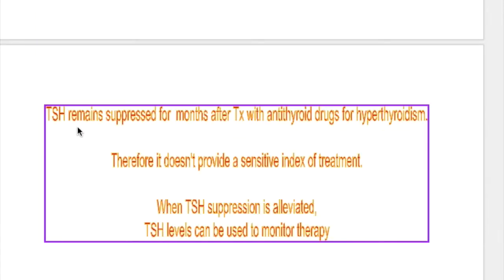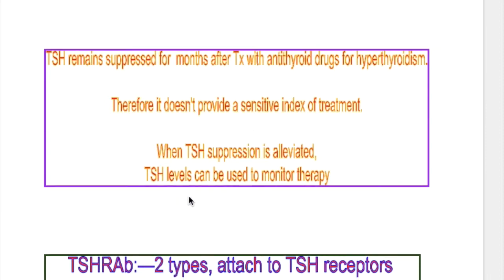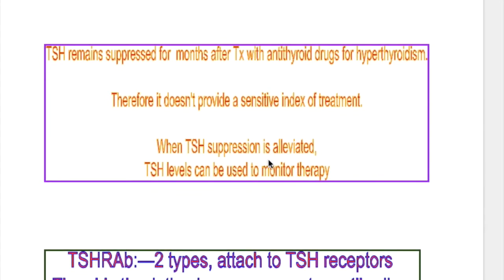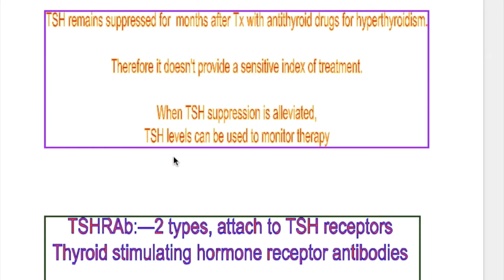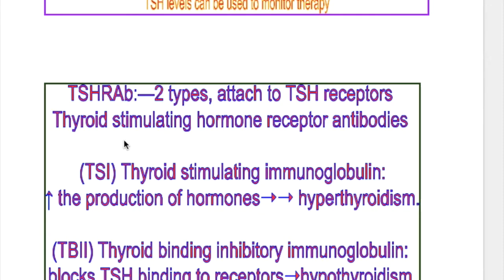Drug treatment for hyperthyroidism causes TSH suppression. TSH remains suppressed for months after treatment with antithyroid drugs for hyperthyroidism; therefore, it doesn't provide a sensitive index of treatment. When TSH suppression is alleviated, TSH levels can then be used to monitor therapy.